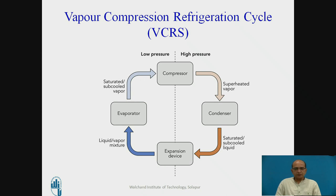VCRS works on the principle of one of the statements of the second law of thermodynamics, which states that there is no engine or system which, while working in a cycle, can transfer heat from a low temperature region to a high temperature region on its own. But this is possible with the help of external work given to the system, and this statement is called the Clausius Statement.